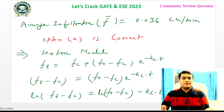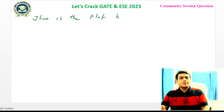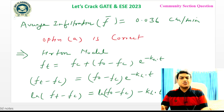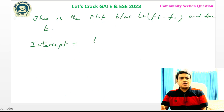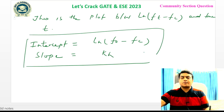If we plot ln(Ft - Fc) versus time T, we get a straight line. The intercept of this line is ln(F0 - Fc) and the slope of the line is -Kh. This linearized form of Horton's equation is useful for determining the model parameters graphically.